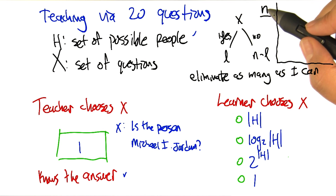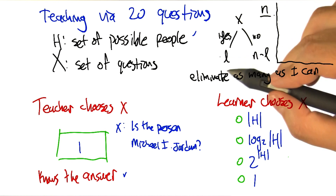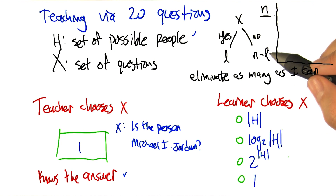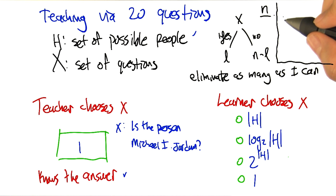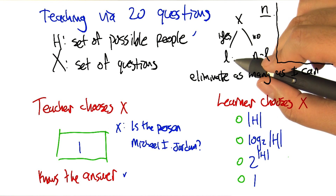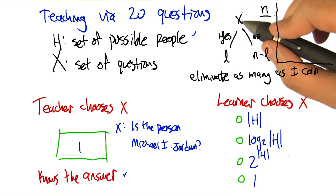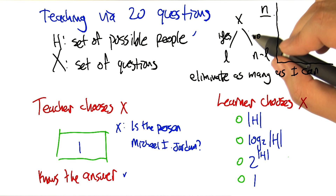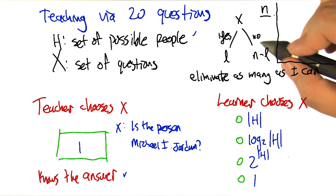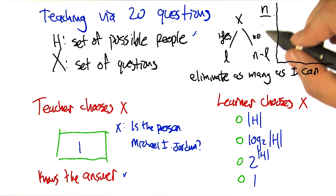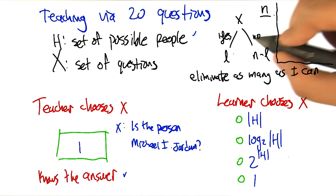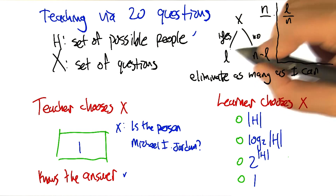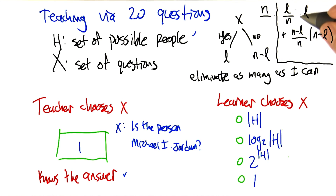In particular, if you have a question x that you ask when there are n possible people, and after you ask it, if the answer is yes you're at l possible people, and otherwise you're at n minus l — we don't know which branch we'll go down. But we can put a probability on it. Since the target is uniformly chosen, this particular question will have a probability of l over n of going down the left branch and getting l, and a probability of n minus l over n of going down the right branch and getting n minus l. That's one way of actually scoring this question.